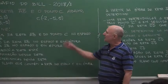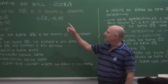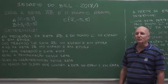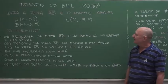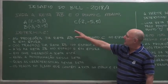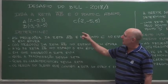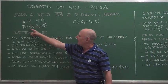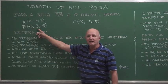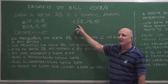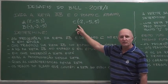Well, guys, let's see our challenge now of 2018-01. Our challenge is very simple. We are giving you three points, so that the points A and B will form a line AB, and a third point, which is point C.